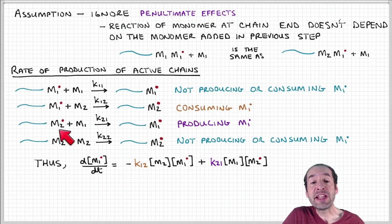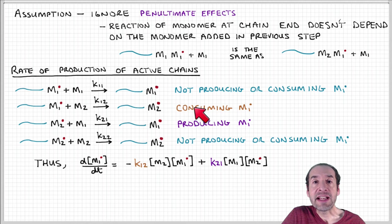Similarly, if we have a chain with an active site associated with monomer two at the end and we add monomer one, now we have an active chain where the free radical site is associated with monomer one. We can think of those as consuming or producing chains with active sites associated with monomer one.